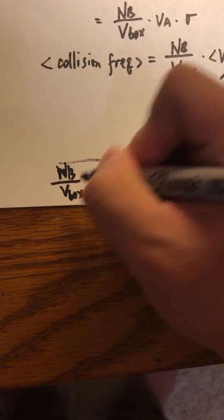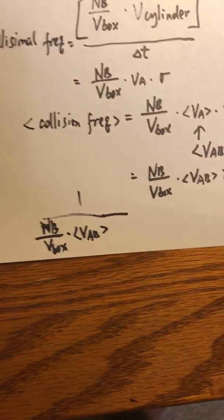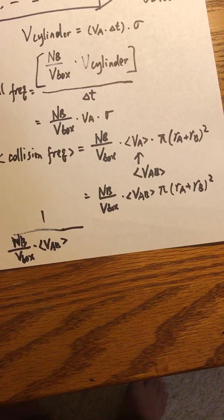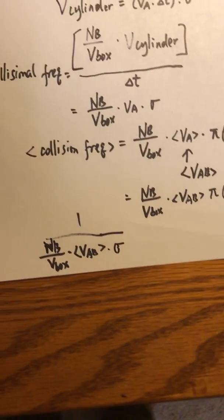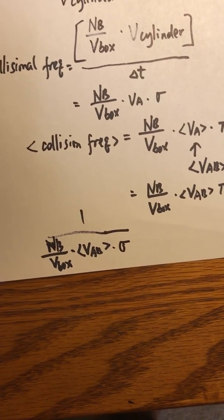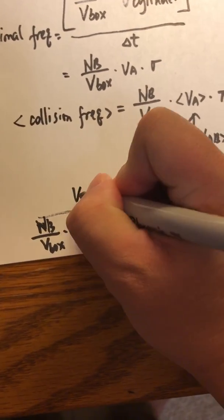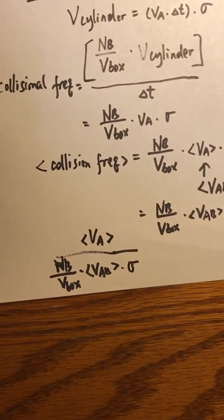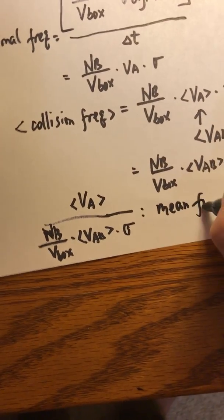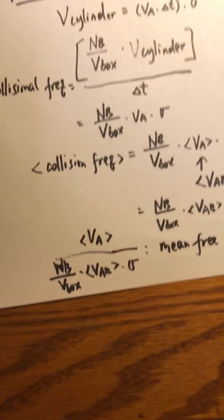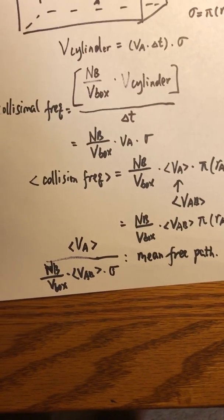The reciprocal is N_B over the volume of the box times the relative speed between A and B times sigma, where sigma is the collision cross-sectional area. We then multiply this time period by the average speed of A. This gives the final expression for the mean free path of molecule A surrounded by all those B molecules. Of course, A can also collide with other A molecules, and we would have to make the corresponding corrections.